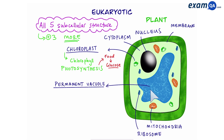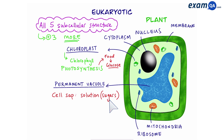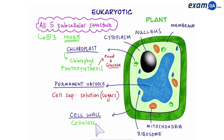A permanent vacuole is where all of the cell sap, or solution of sugars and ions, is found. Animal cells also have vacuoles, but they're not permanent — the key point is that a plant cell has a permanent vacuole. Finally, a cell wall, which is made of a tough material called cellulose, supports the plant and gives it its shape. The cell wall is always on the outside of the cell membrane.